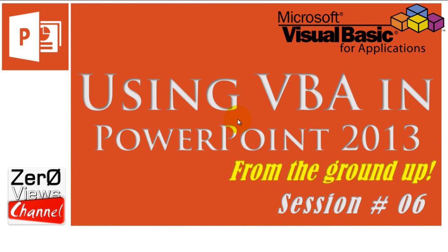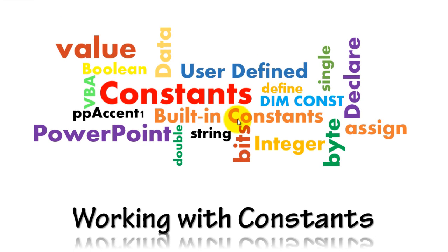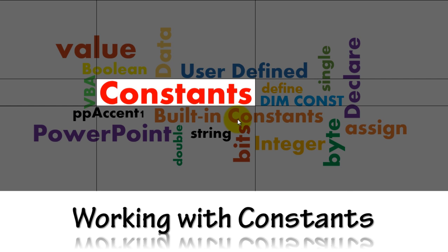Hello and welcome to another session of using VBA in PowerPoint 2013. This is session 6 and we are going to talk about constants — how to work with them. A constant is a value that does not change. There are different kinds: built-in constants and user-defined constants. Today we'll do some hands-on with both, seeing how constants are declared and used in VBA.